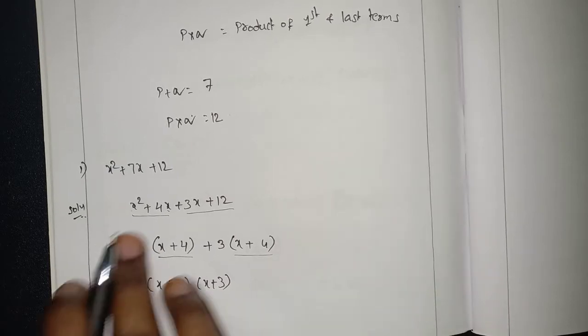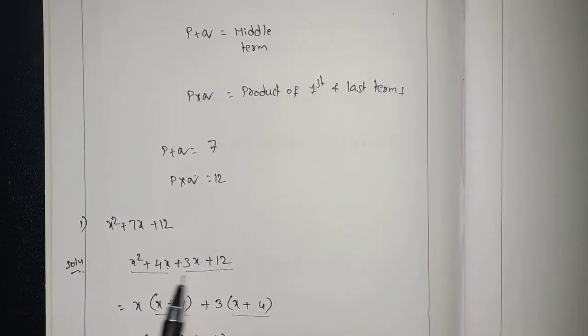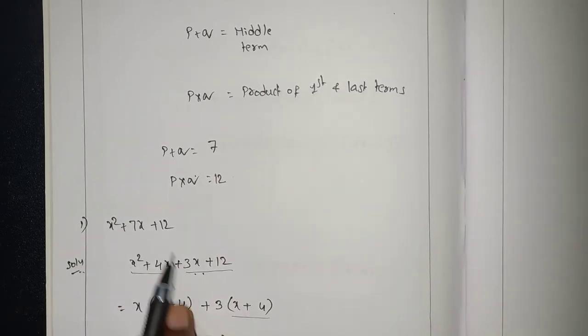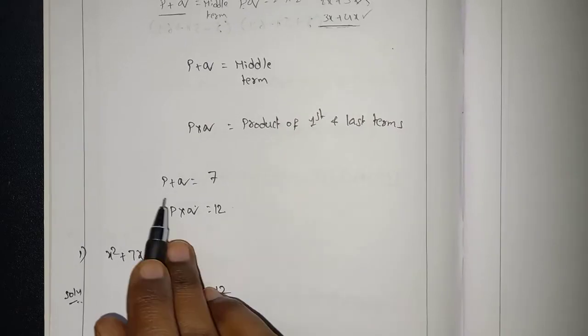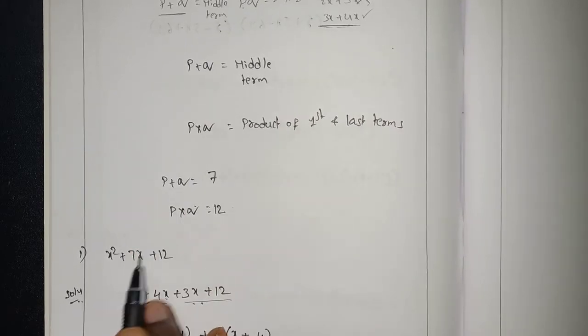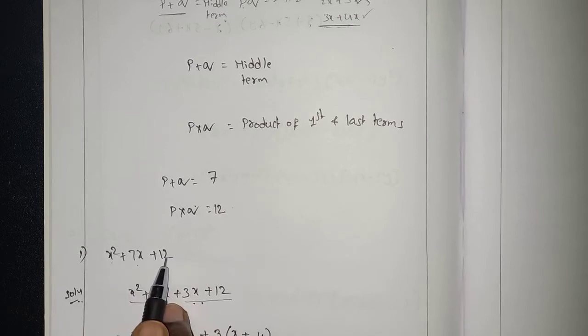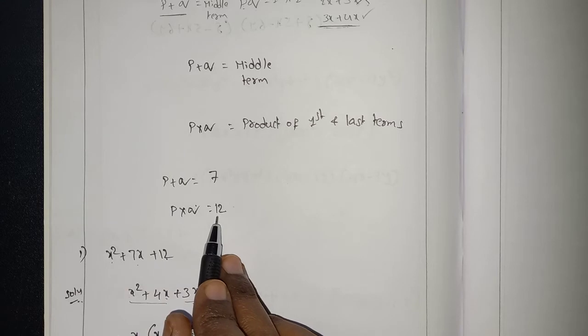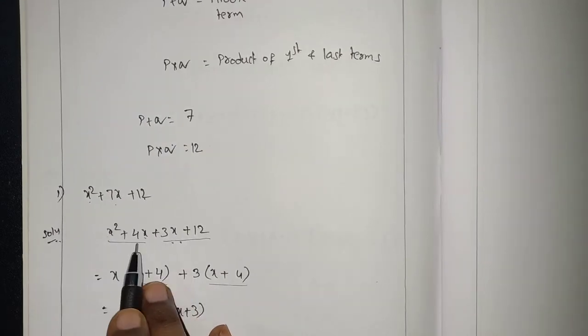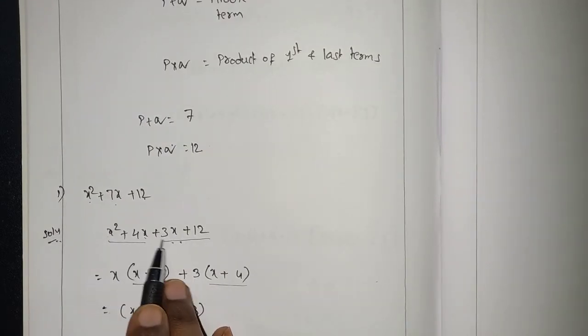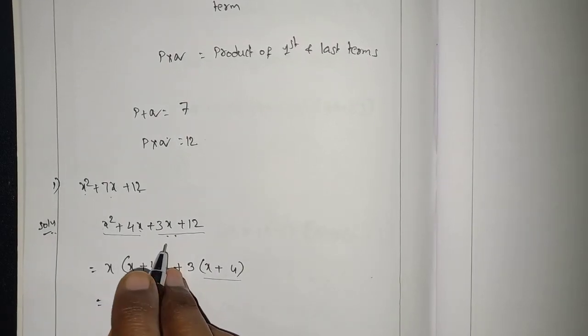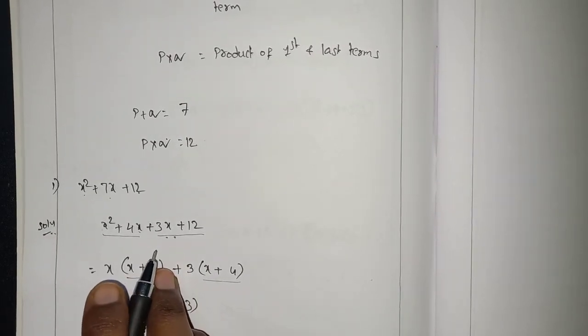Simple, three steps. But you should be able to understand which two numbers we have to use to split it. That should be P plus Q means this one, and P into Q means product of first term and third term. So here 12 into 1 is 12, and 4 plus 3 is 7, and 4 into 3 is 12. That is the reason we choose 4 and 3.